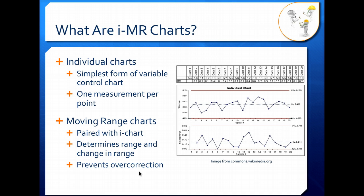First, what are IMR charts? Well, there are two charts. They are individual, that's the I, and moving range, that's the MR. So an individual chart is the simplest form of a variable control chart. You have only one measurement per point. So you don't really have subgroups in this case, you just have a single measurement. This is equivalent to an X-bar chart.